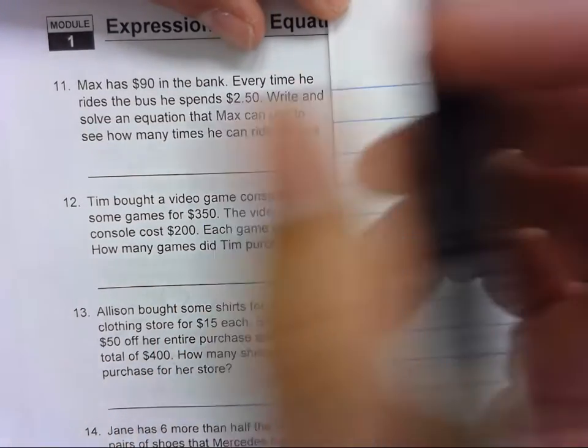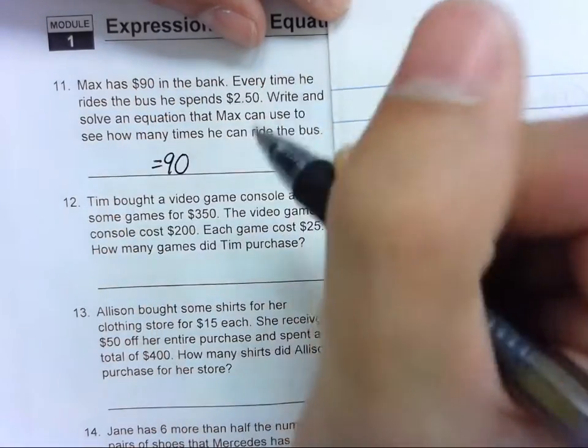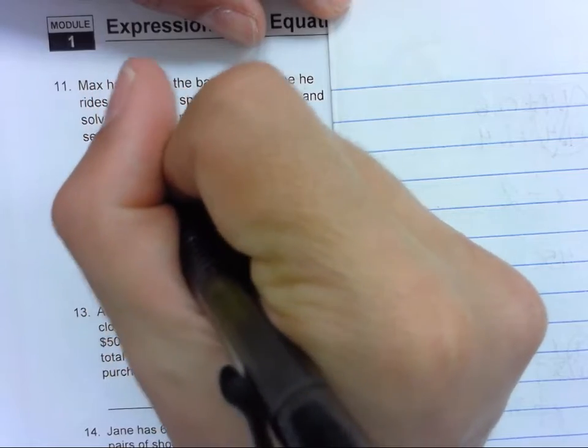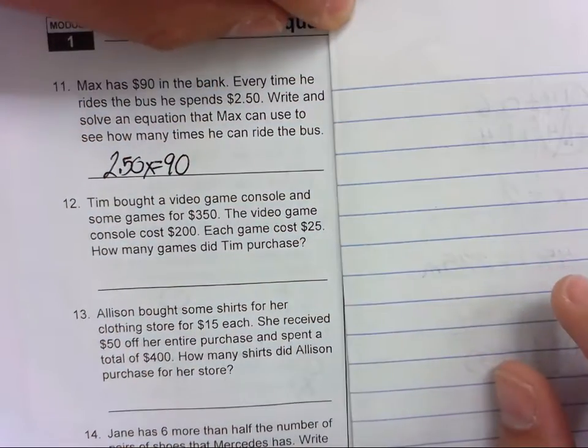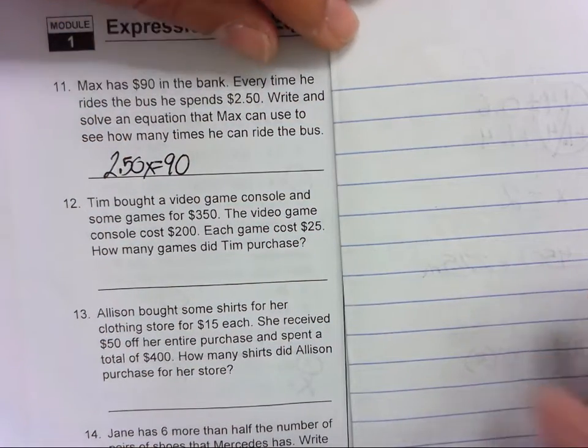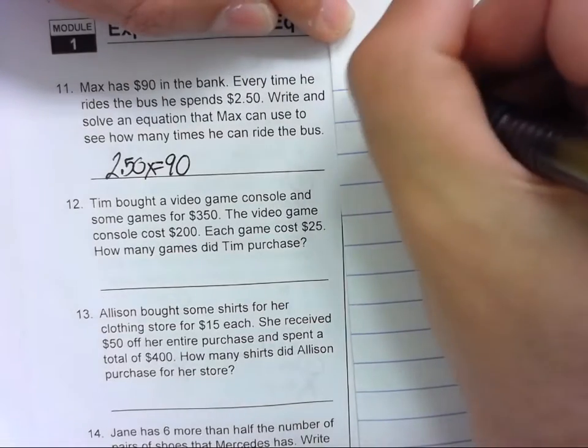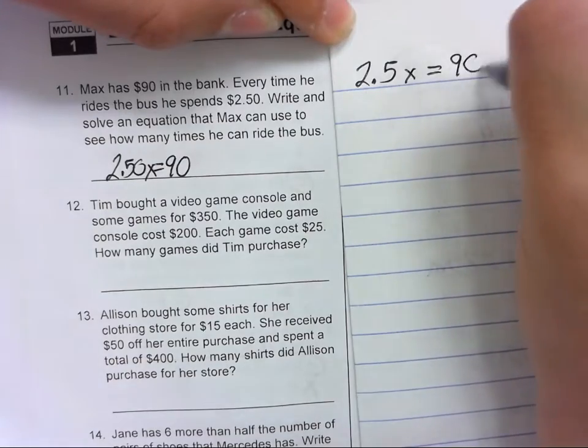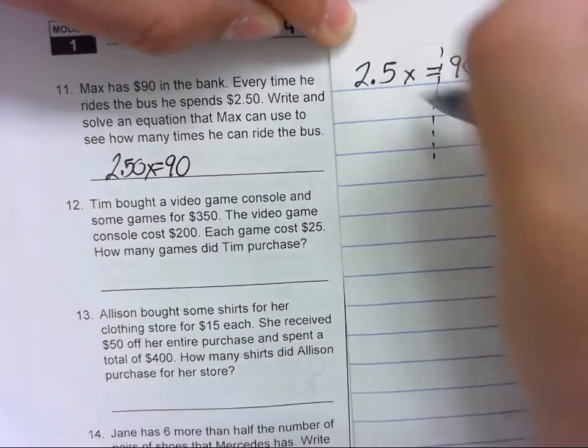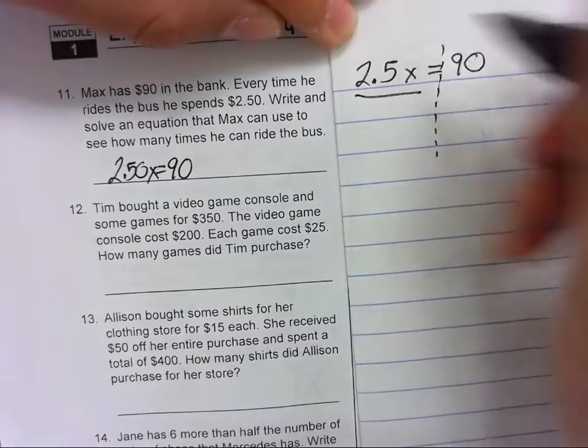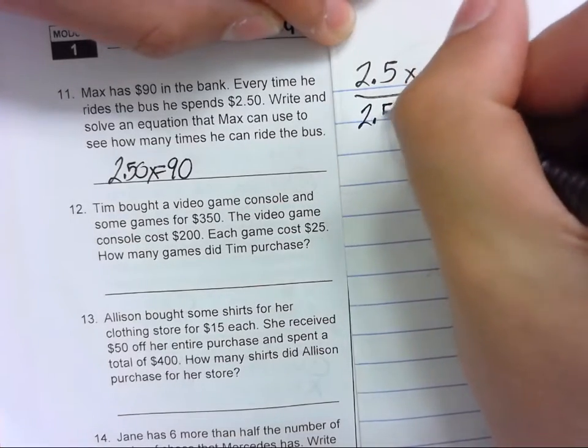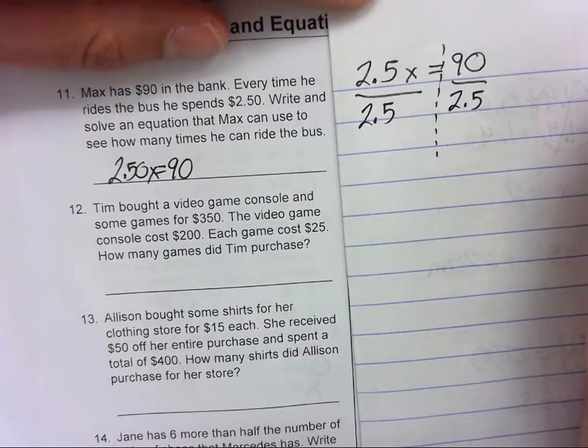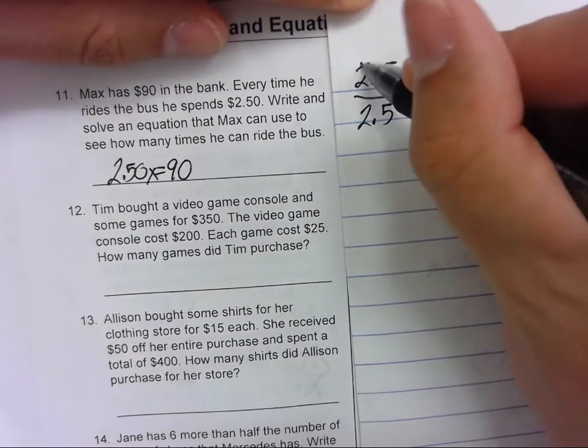Okay, so he has 90. Every time he rides the bus he spends two dollars and fifty cents, so 2.50x. Let's solve that. 2.5x equals 90. We need to divide 2.5 on each side. These will cancel.